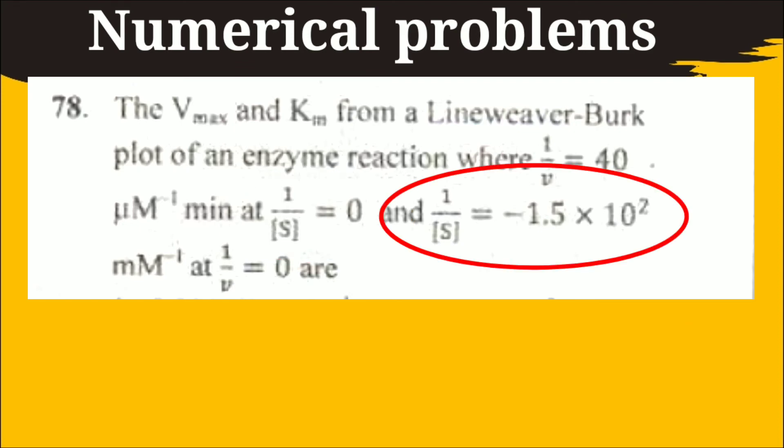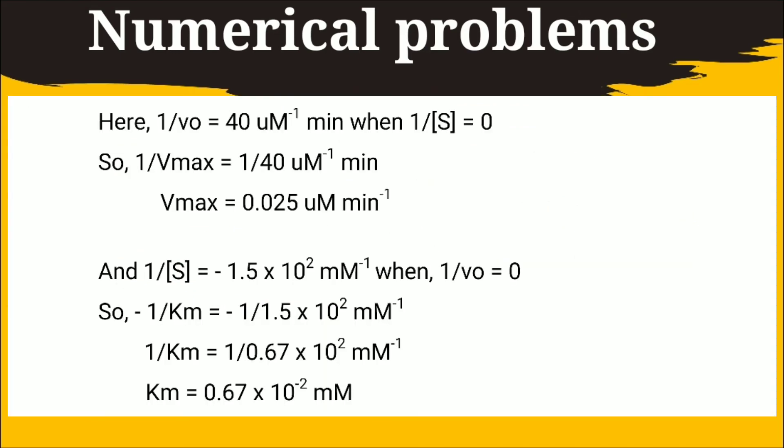Here 1 by V0 is 40 when 1 by S is 0. And 1 by S is equal to minus 1.5 into 10 to the power 2 when 1 by V0 is equal to 0. That means the straight line cross the y-axis at 40 and x-axis at minus 1.5 into 10 to the power 2. First I will calculate the value of Vmax.